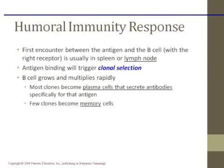Antigen binding triggers clonal selection: the antigen binds to a specific antibody or immunoglobulin receptor on a B cell, which triggers the B cell to clone itself and grow rapidly. Most clones become plasma cells that secrete antibodies, and a few clones become memory cells.